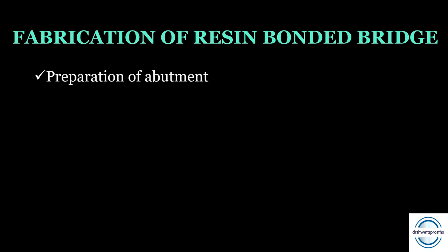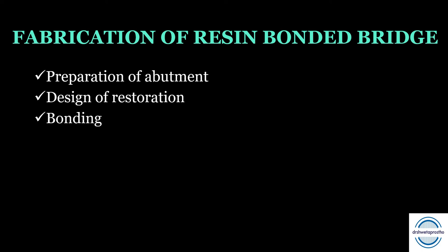Fabrication of resin bonded bridges includes three main steps: first, preparation of the abutment by the clinician in the clinic; second, design of the restoration done in the lab; and third, bonding — again a chairside procedure for bonding the bridge.